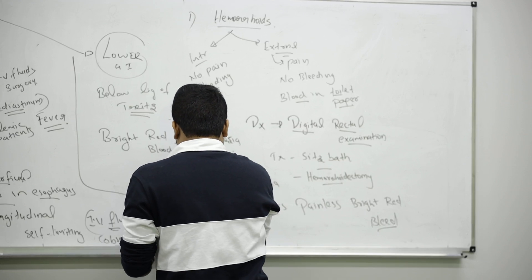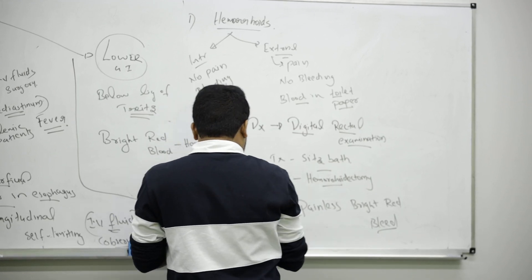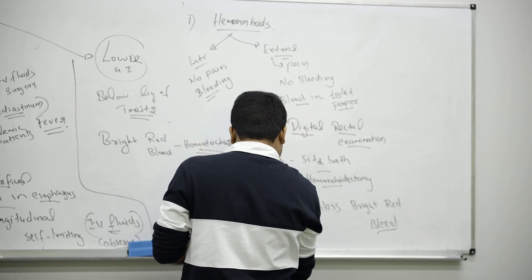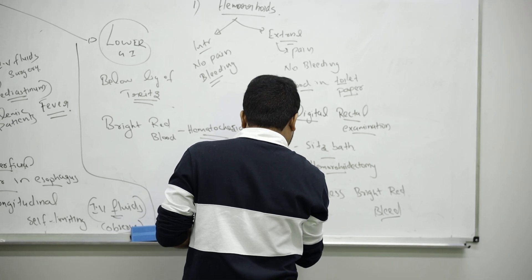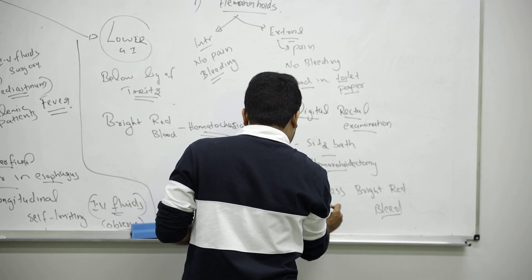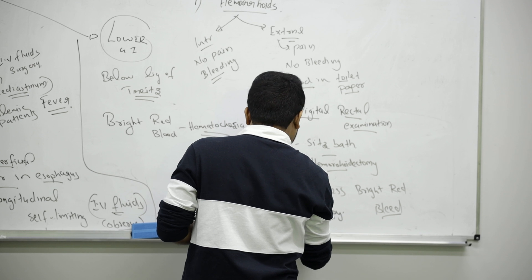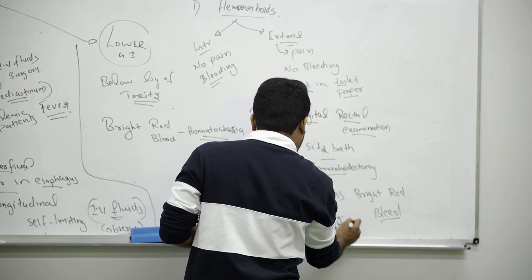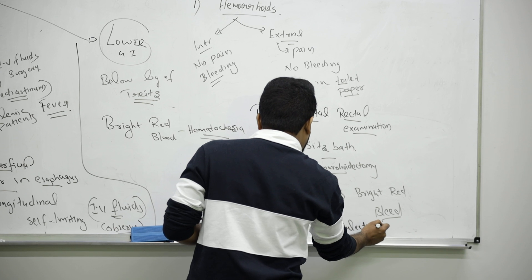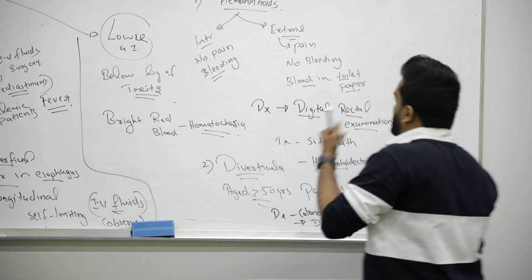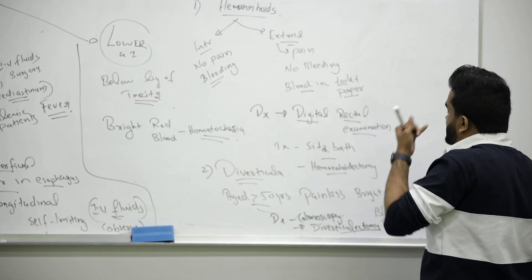Here also diagnosis is done by colonoscopy. You do diverticulectomy—remove that diverticulum. Surgery will be done. That is the second reason for lower GI bleed.